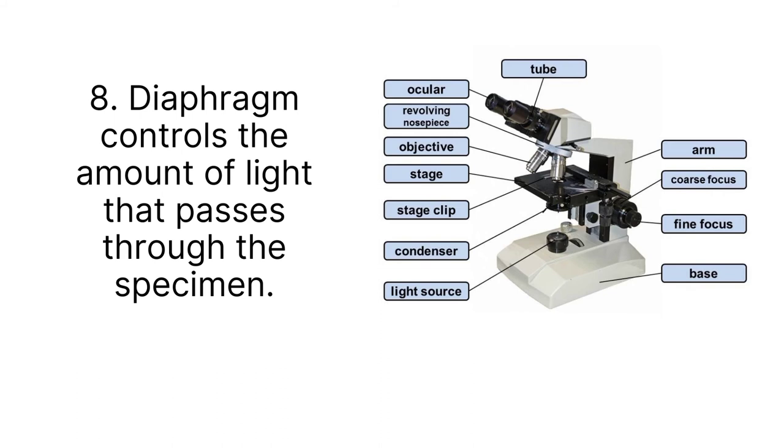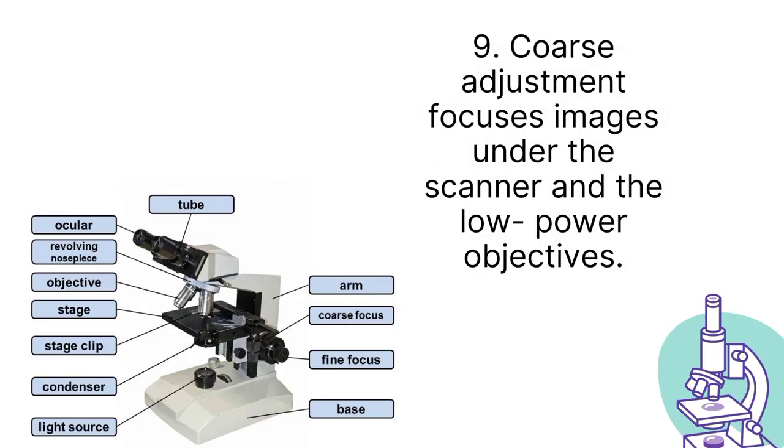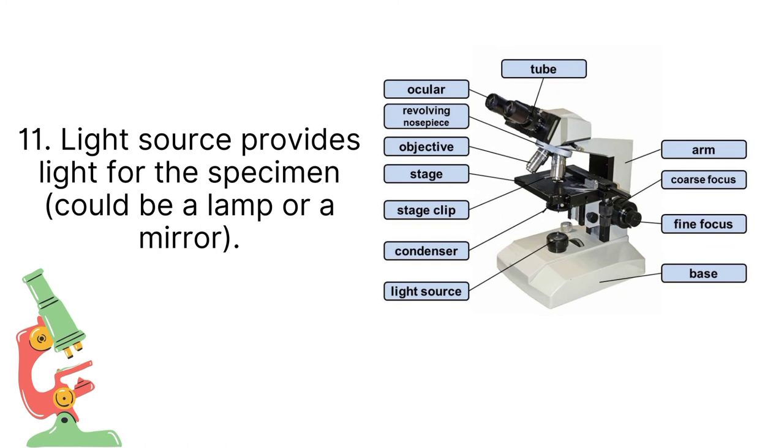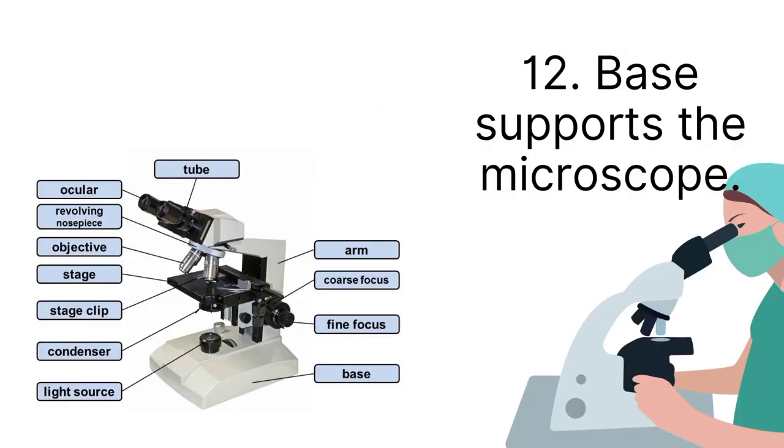Coarse adjustment knob. This is the first one you'll use to focus the image under scanner and low power objectives. Fine adjustment. This is used to focus the image under high power and oil immersion objectives. Light source or mirror. This provides light for the specimen. It could be a lamp or a mirror. Base. It is the supporter or it supports the whole microscope.